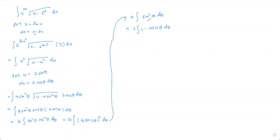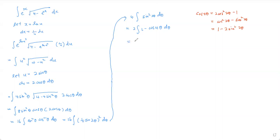Applying the double angle formula again, this becomes 2∫ (1 − cos4θ) dθ. Note that cos4θ = 2cos²2θ − 1 = cos²2θ − sin²2θ = 1 − 2sin²2θ. Integrating gives 2[θ − ¼sin4θ] + C.